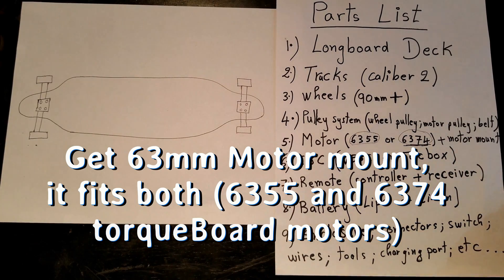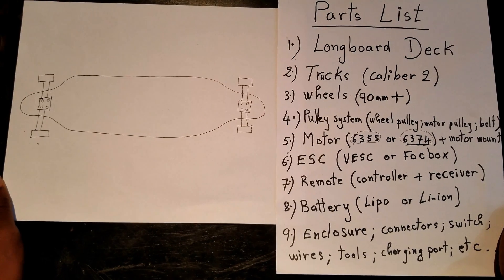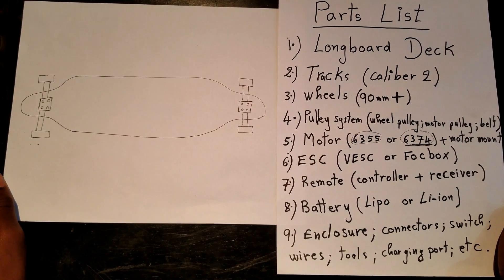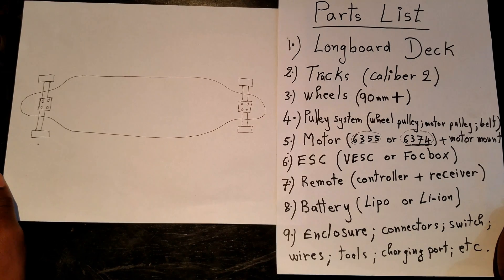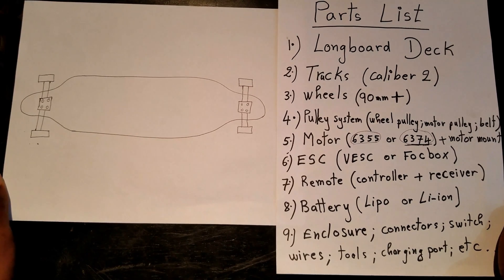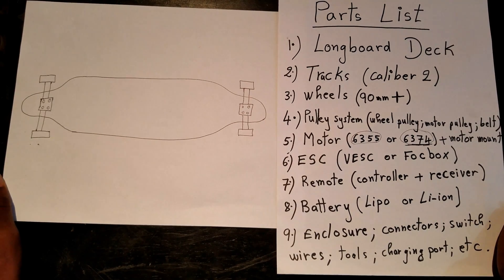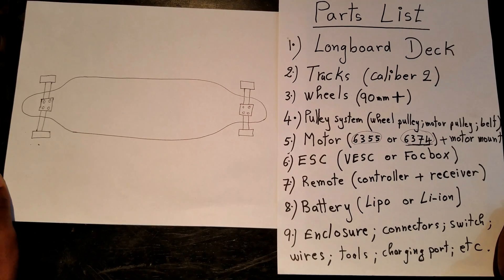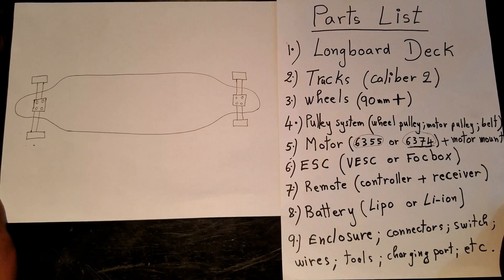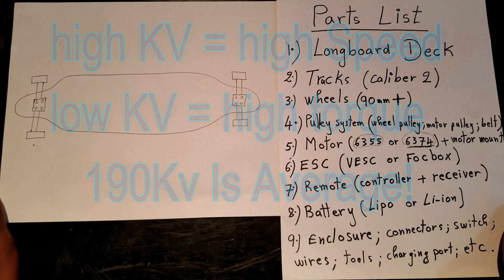For the motor, you can go with 190 KV. That's what I'd always go with because you have as much torque as you can and at the same time you also have a high speed. When the KV motor is high you have more speed, and when it's low you have more torque.